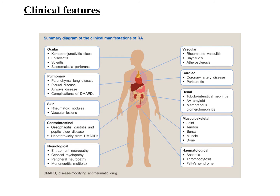The clinical features of rheumatoid arthritis involve almost every system. In the eye, it can cause episcleritis and scleritis. In the lung, it can cause interstitial lung disease, either primary to rheumatoid arthritis or secondary to the treatments used. In the GIT, it can cause hepatotoxicity. Neurologically, it can present with carpal tunnel syndrome, entrapment neuropathy, or mononeuritis multiplex. In the vasculature, it can cause profound atherosclerotic changes. In the heart, it can cause pericarditis. In the kidney, it can cause AA amyloidosis. In the joints, it causes symmetrical involvement of the small joints of the hand. In the blood, it can cause anemia, thrombocytopenia, or Felty syndrome.